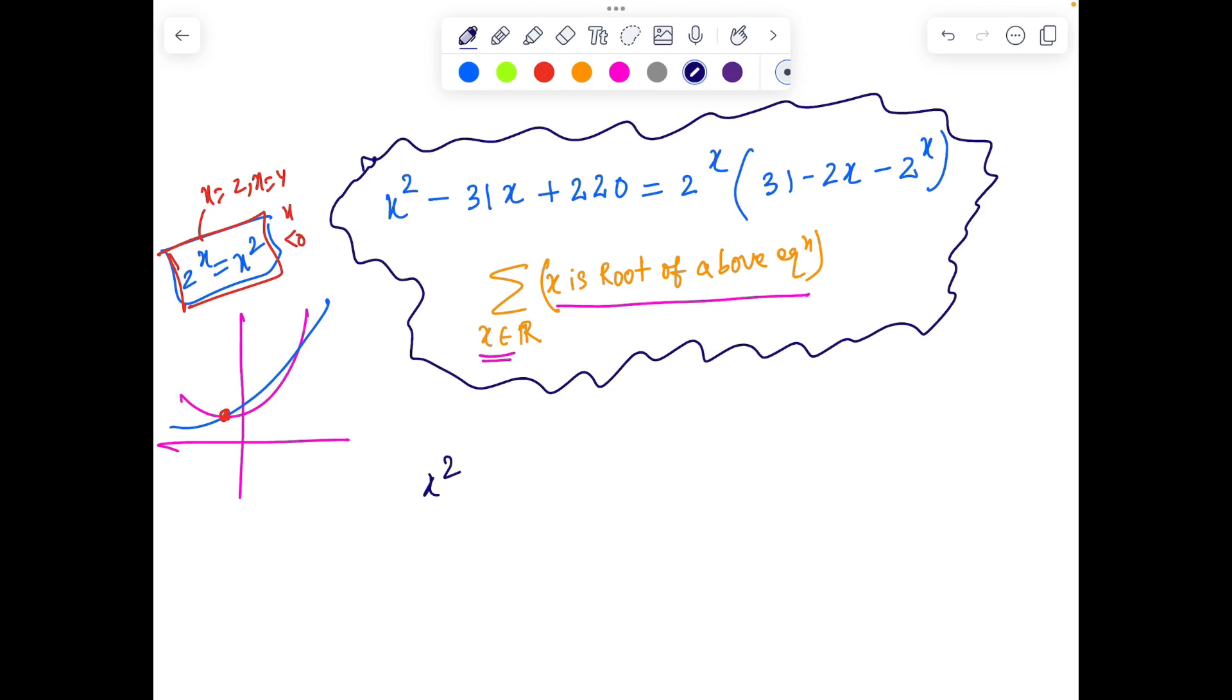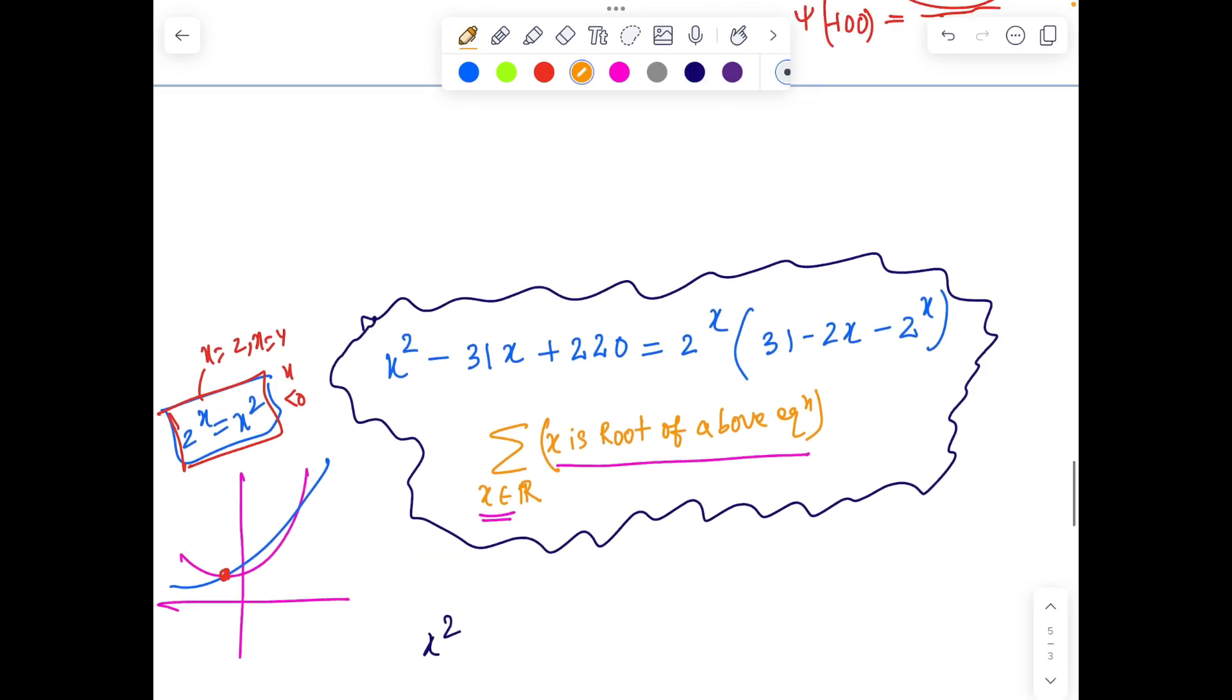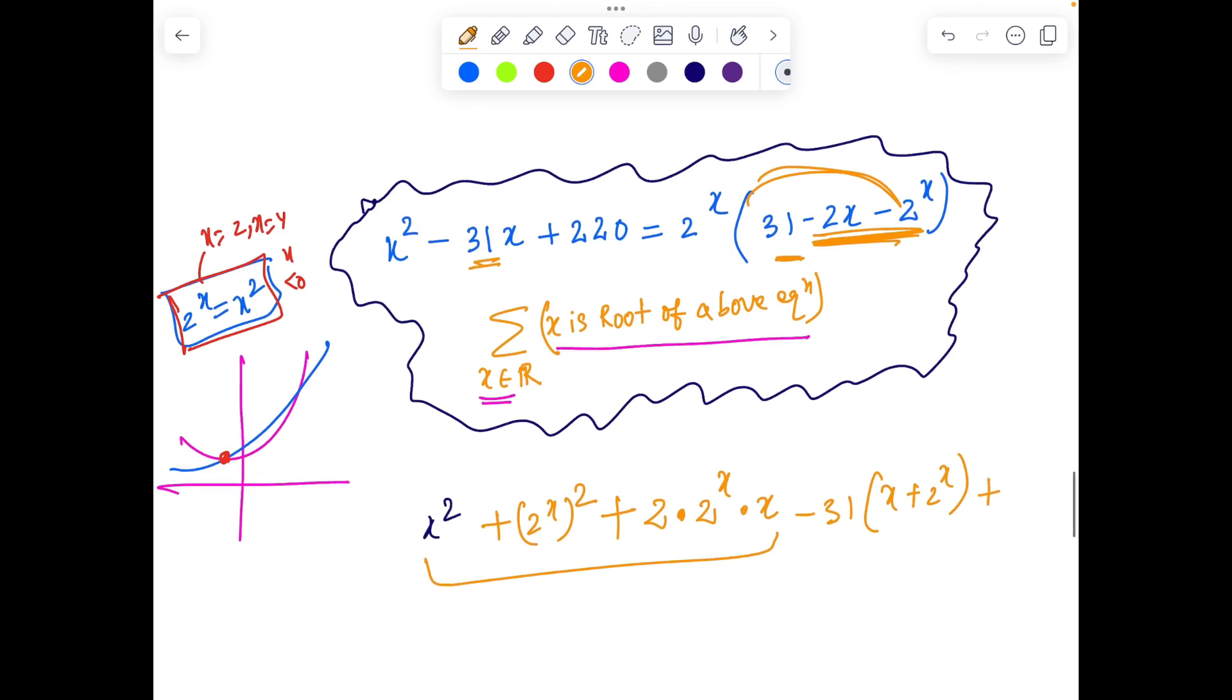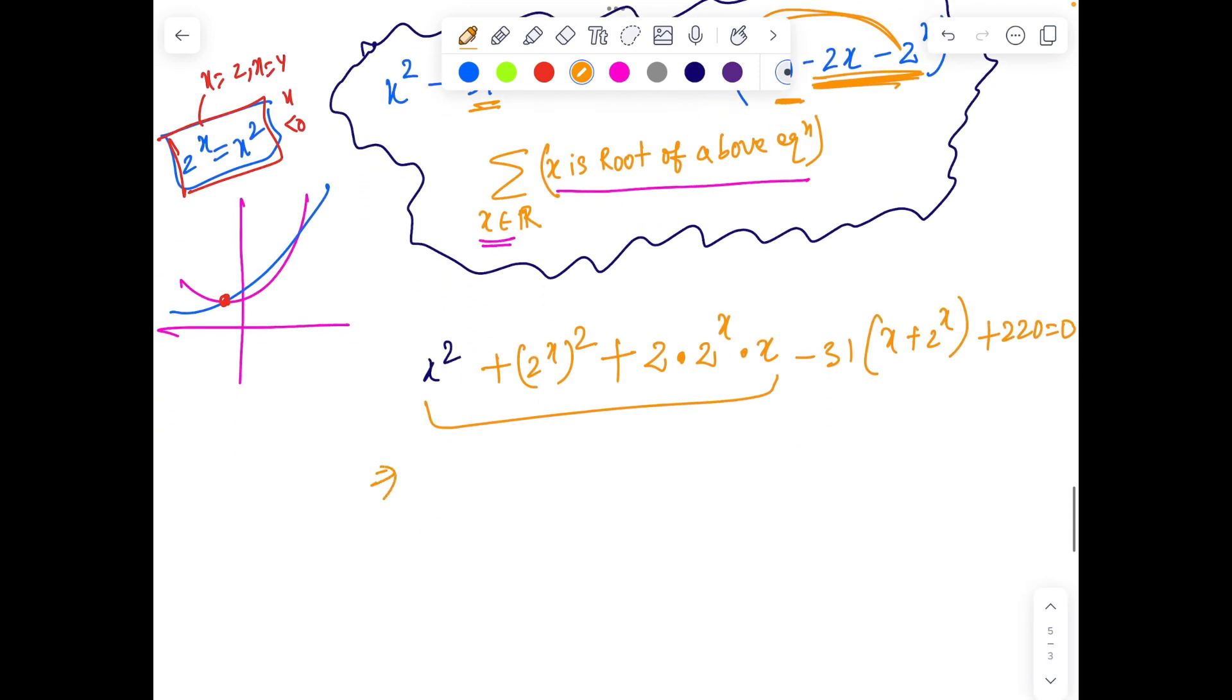So we have X square minus, and 2X times 2X will give 2 to the power 2X, so I write 2 to the power X full square. Let's bring it in LHS. And 2X into minus 2X is also good because that gives us 2 times 2 to the power X into X. And it's good because these two things I'm able to somehow manage and it looks like a perfect square. Moreover, 31 was appearing on both sides. So I can take minus 31 common, transport everything on one side. X plus 2 to the power X plus 220 is nothing.